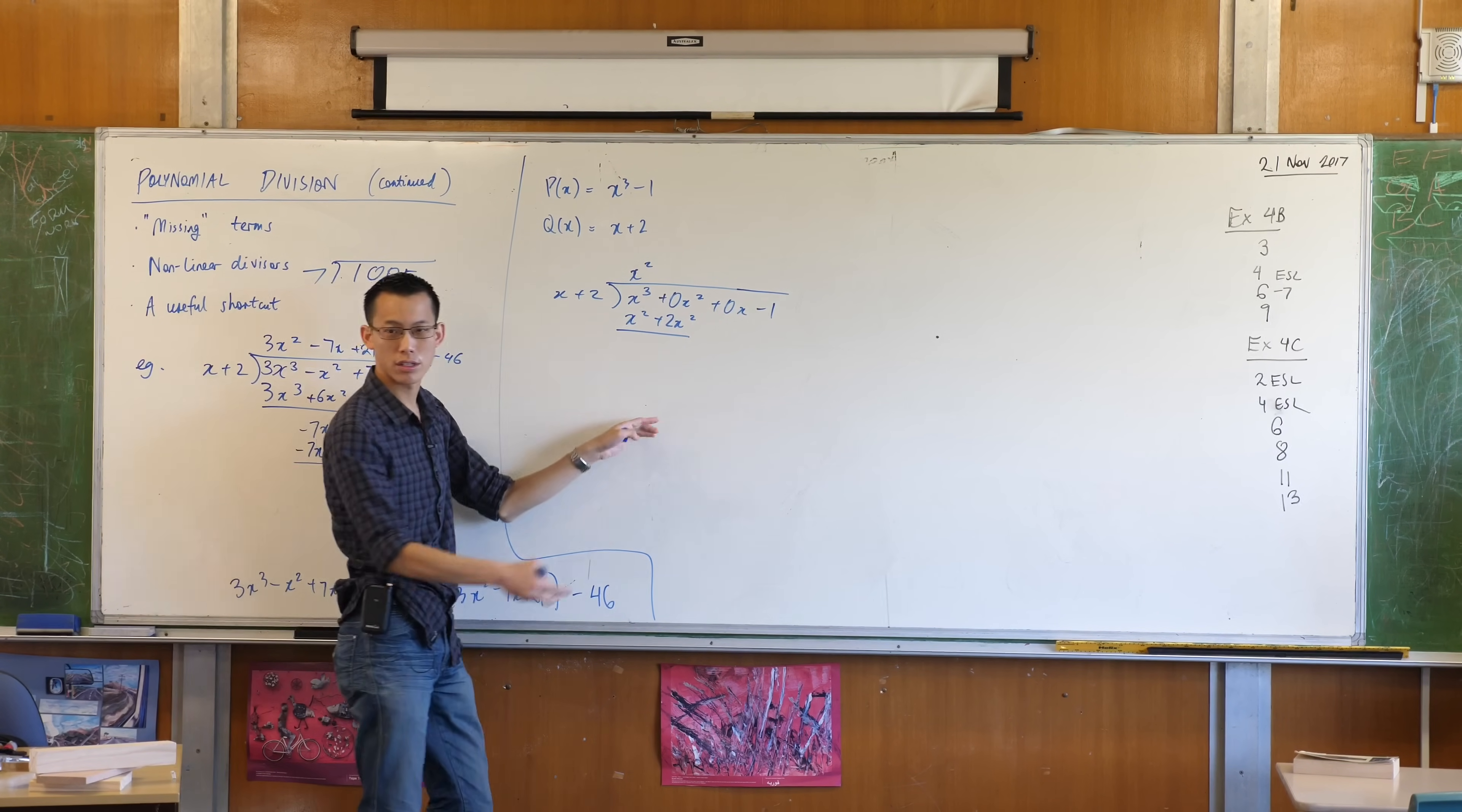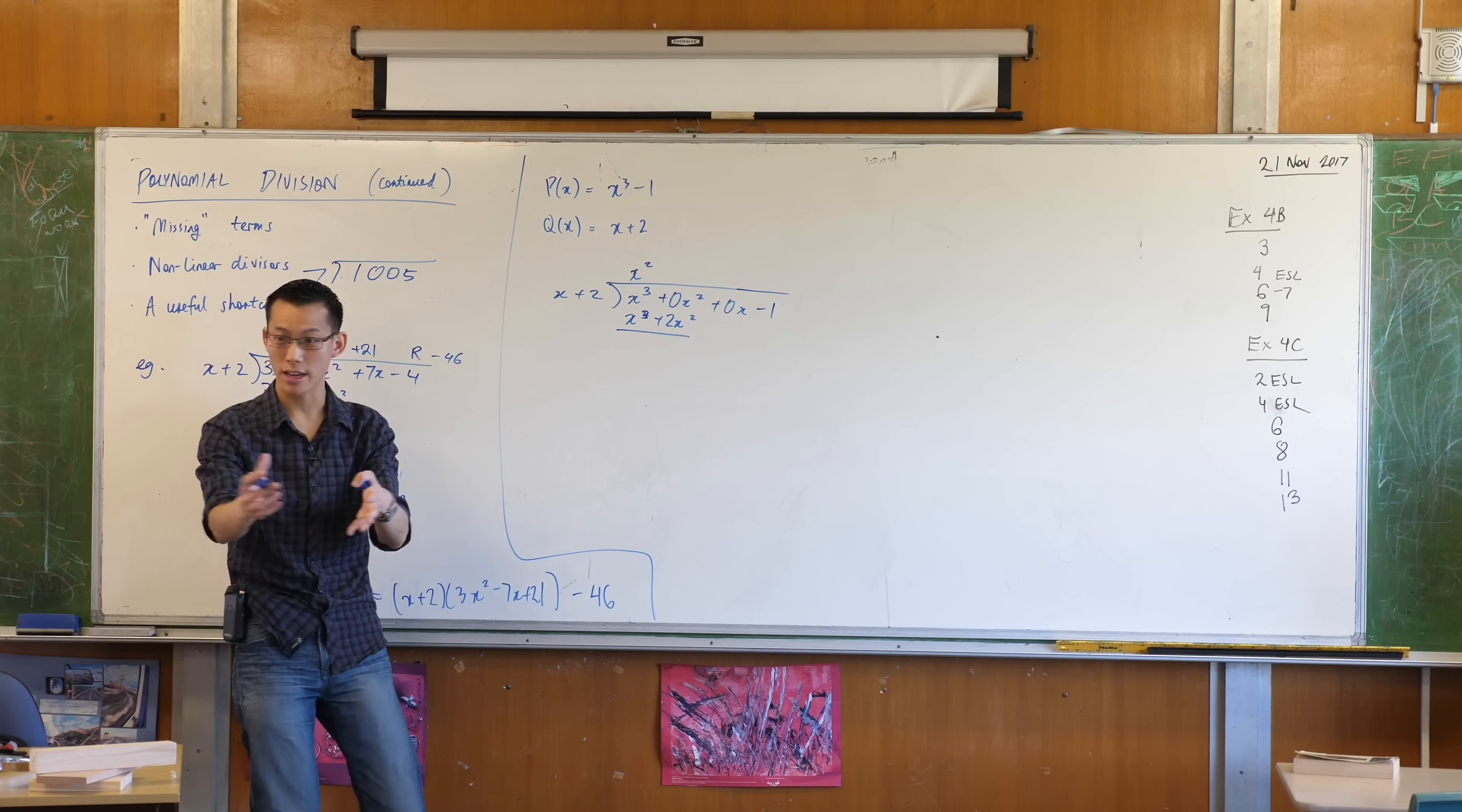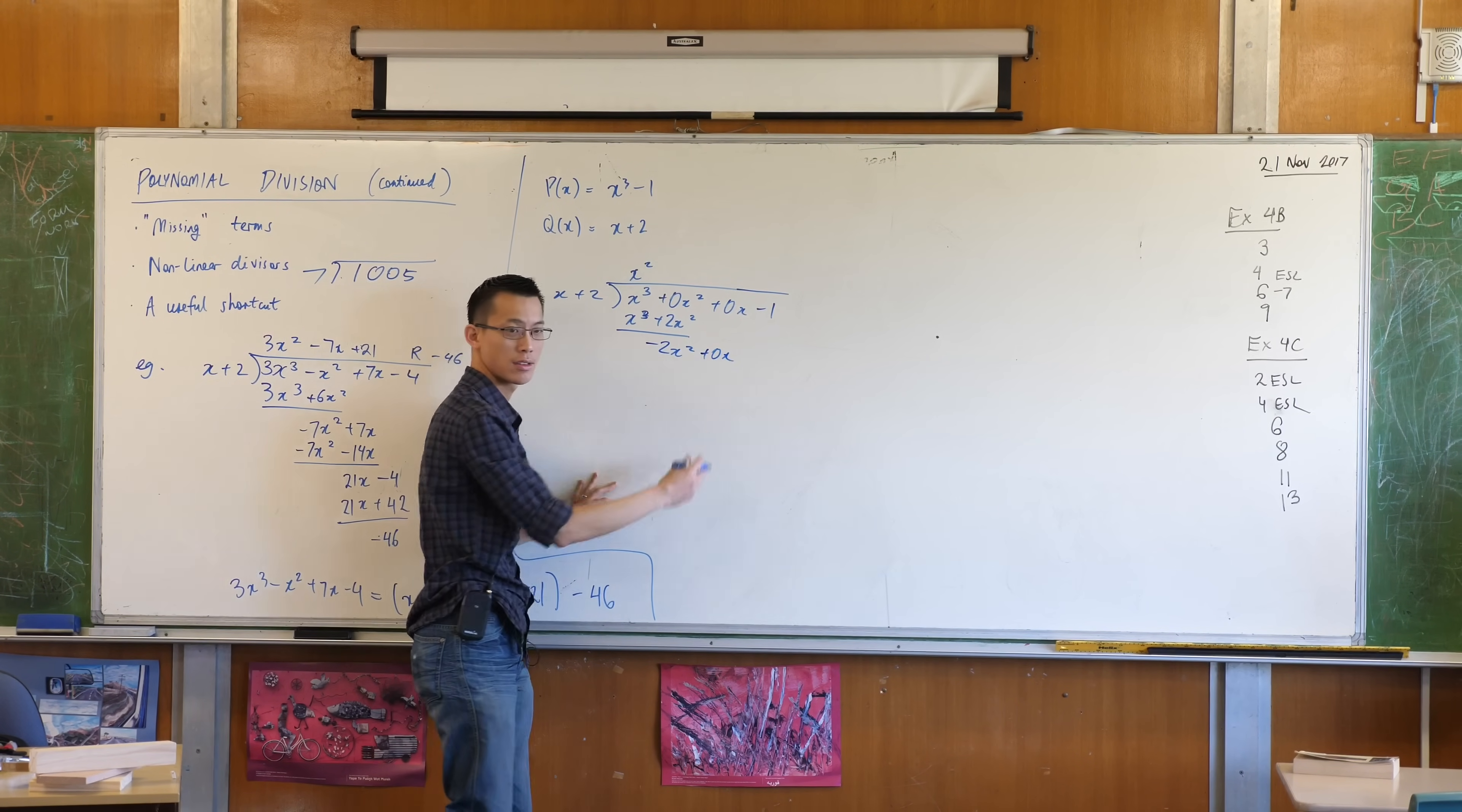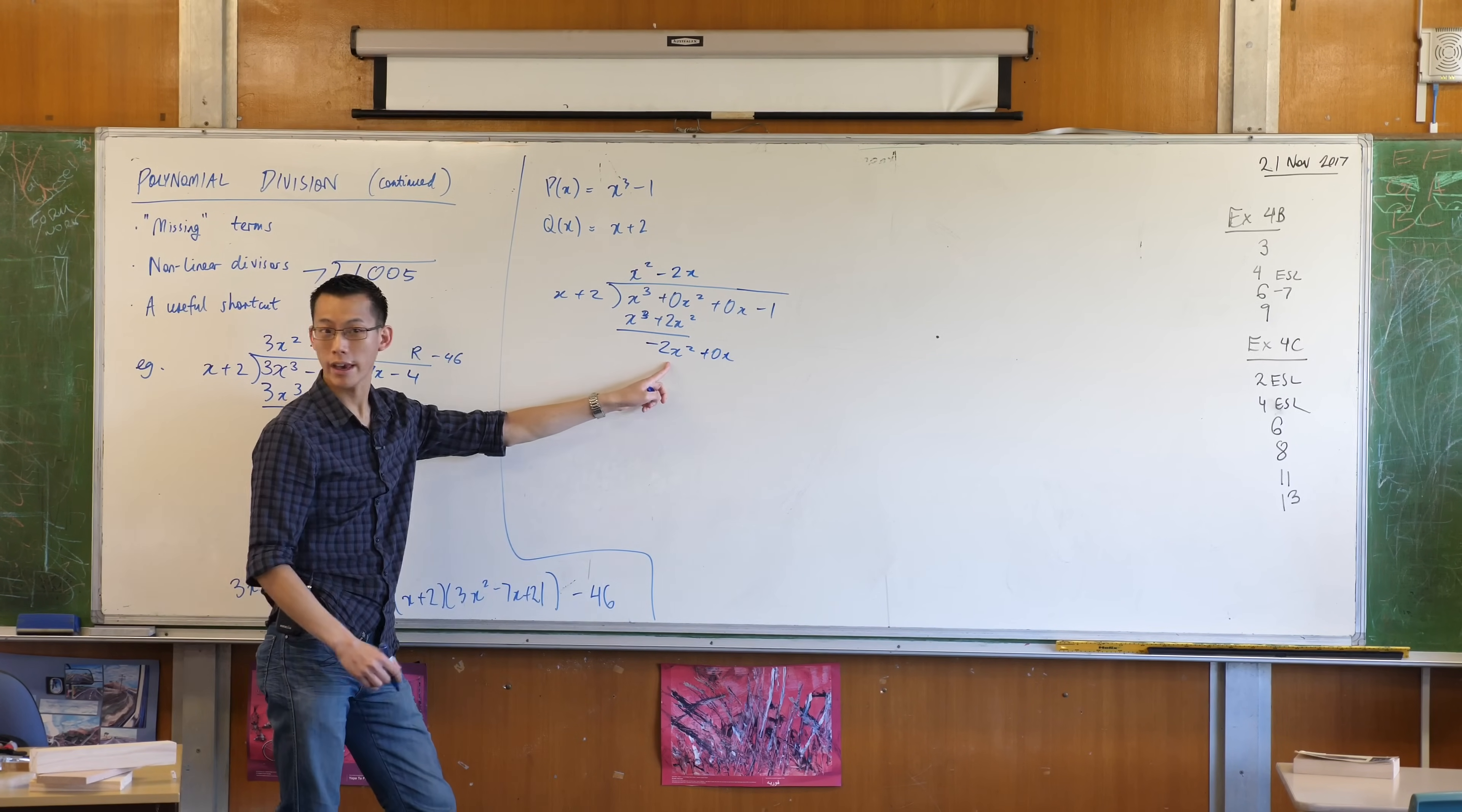So here I've got to now do the subtraction. Yeah, of course it is. Sorry, there we go. So I'm going to do my subtraction now. That all cancels out. This is going to leave me with minus 2x squared. And then I bring down the 0x that's there. I ask this question again. That's going to be minus 2x. Yeah? Are you with me now?